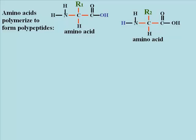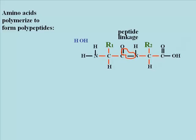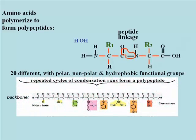The next group of true polymers formed by dehydration synthesis reactions that we'll review are proteins, or more correctly, polypeptides. The amino acid monomers shown here will lose a water molecule when they form a peptide linkage, as shown here. Repetitive condensation reactions will add more amino acids to the dimer to form a polypeptide such as the one shown at the bottom of the slide. 20 amino acids with different side chains, or R groups, and therefore different physical chemical characteristics, are used by cells to make proteins.